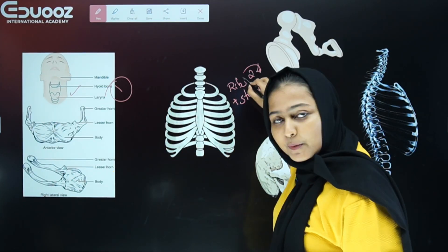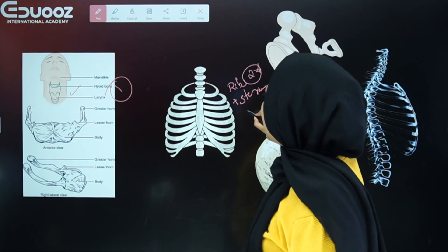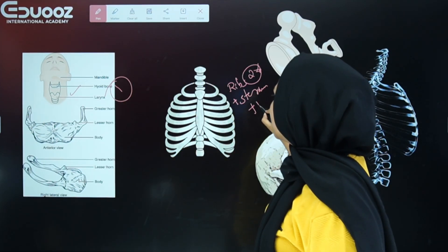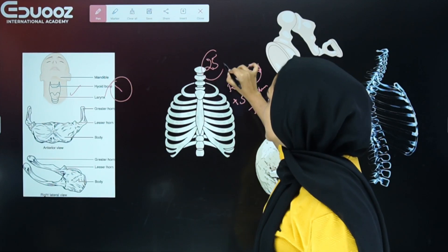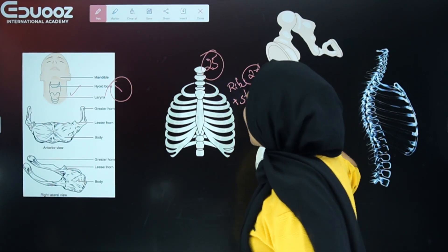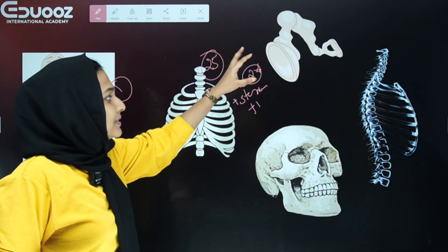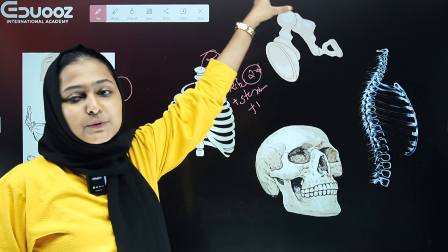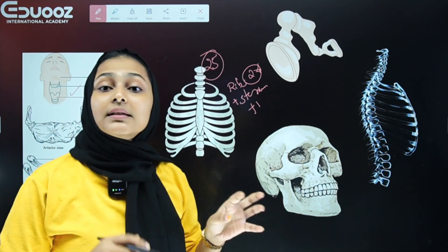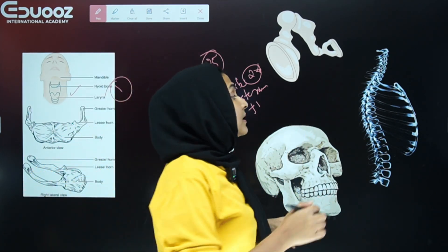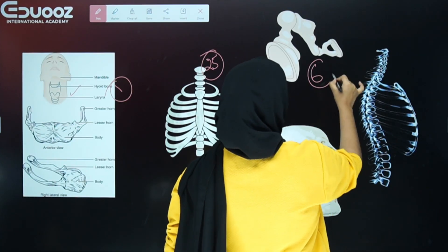Including the sternum, we count that as 1, so the total for the thoracic cage is 25. The auditory ossicles — malleus, incus, and stapes — are present in both ears, giving us 6 auditory ossicles in total.